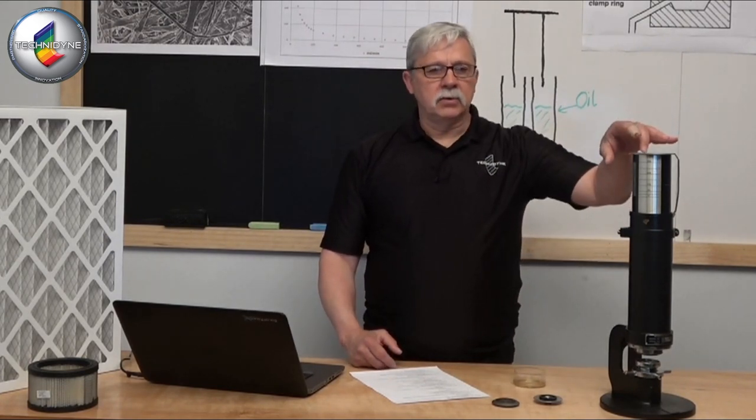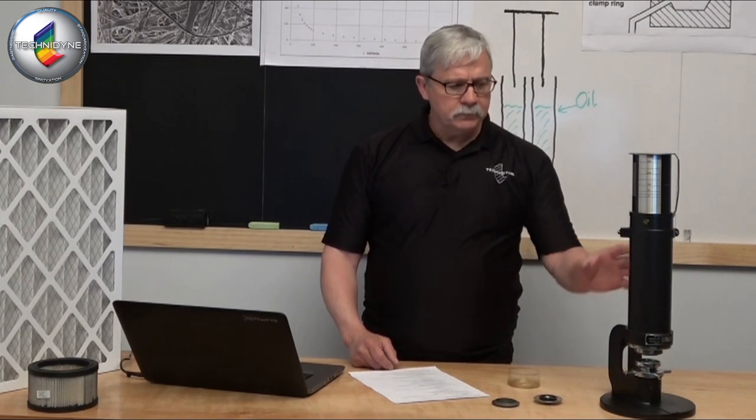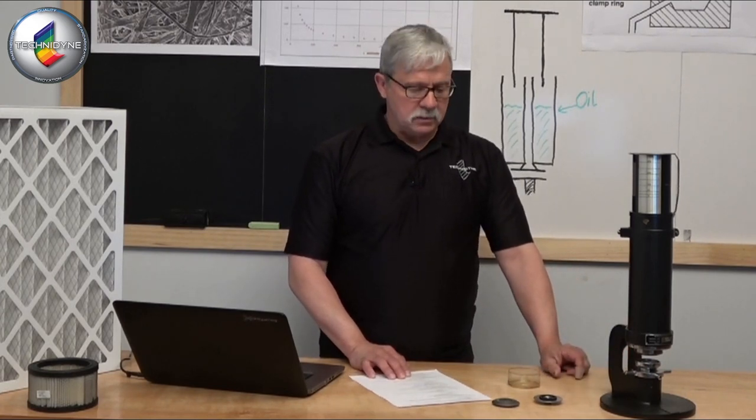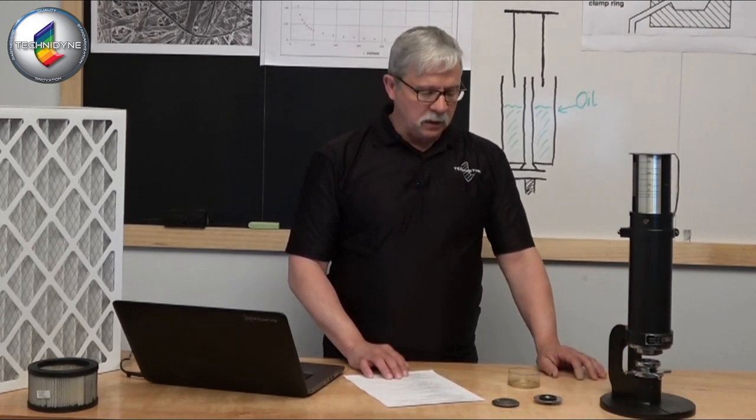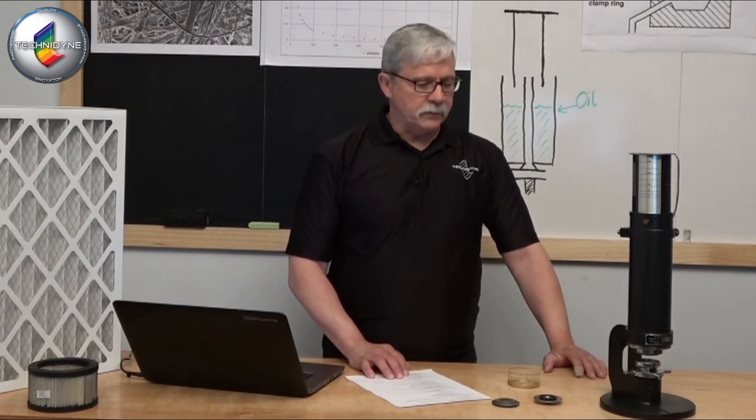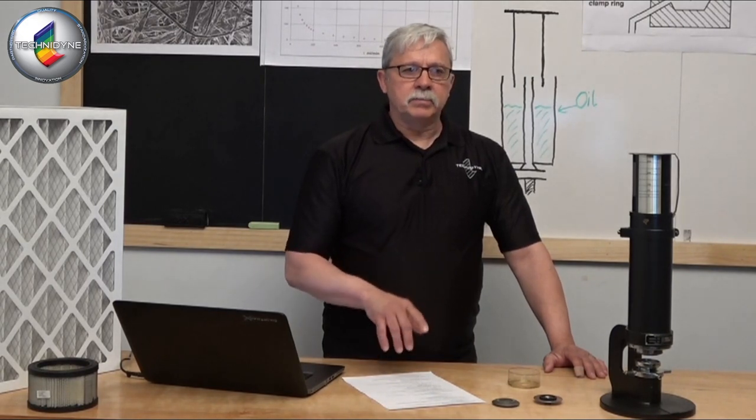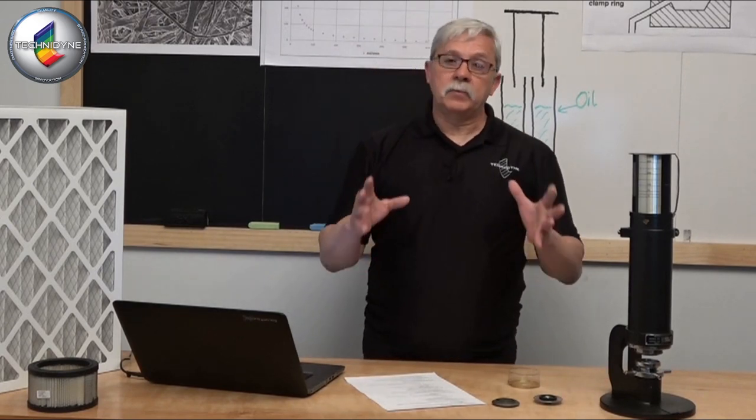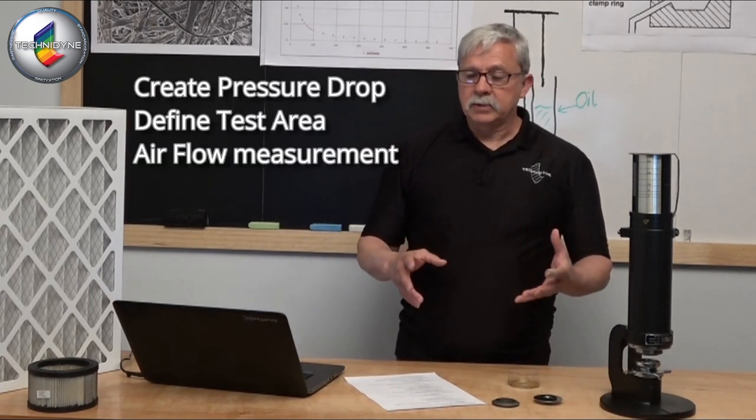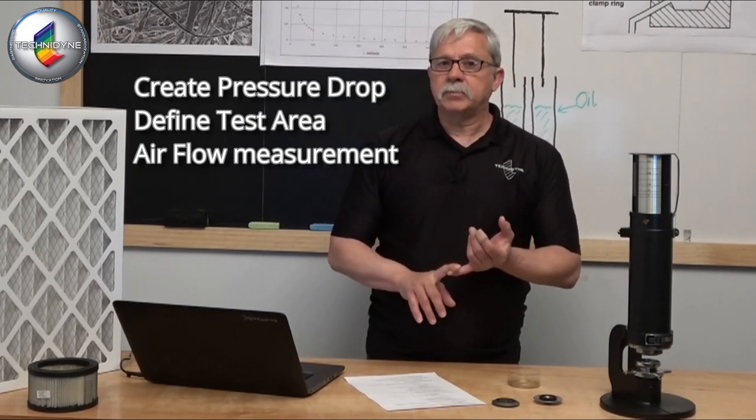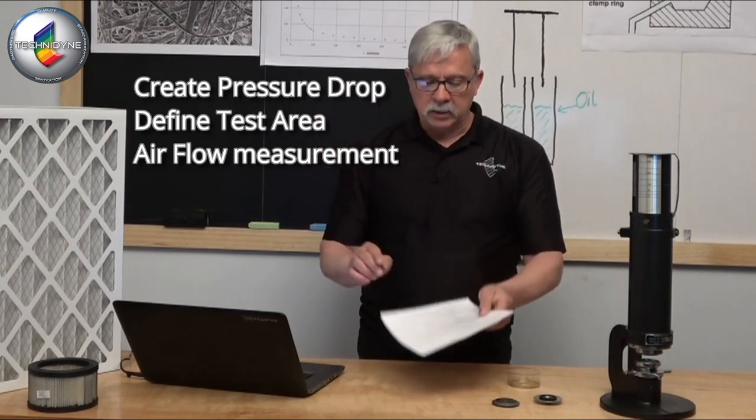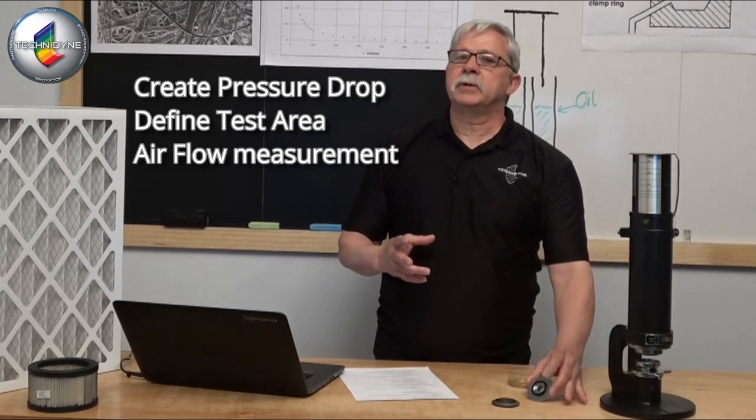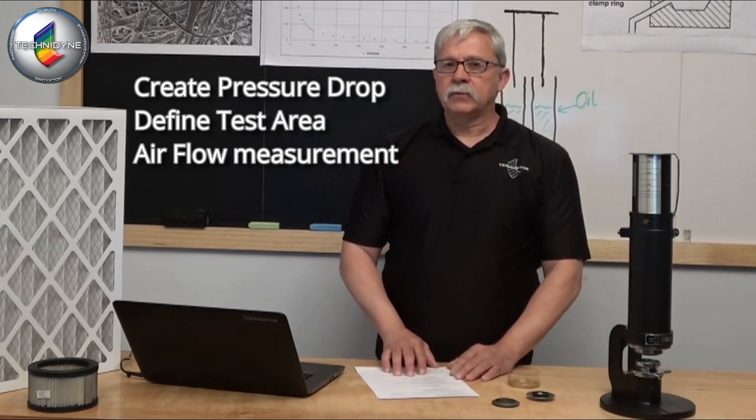So this is the vintage Gurley densometer on display here. This is a fairly old model that we've kept on hand here for some displays and for other reference purposes. In the earlier video I talked to you a little bit about similarities from one method to another. One of those similarities certainly is developing some type of pressure drop across the sample in the z direction. Another similarity is using some type of clamping mechanism so we can define the area that we're going to be forcing that air through.